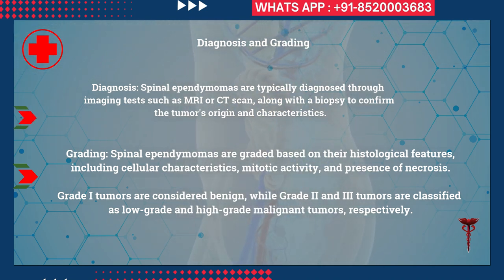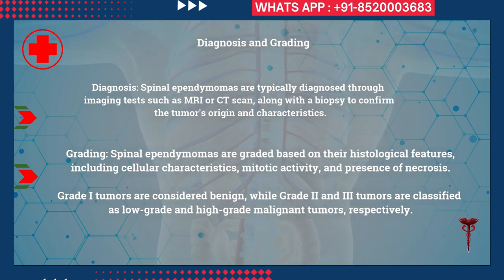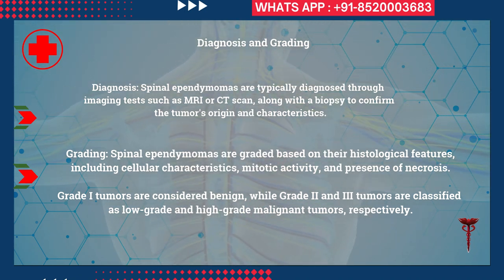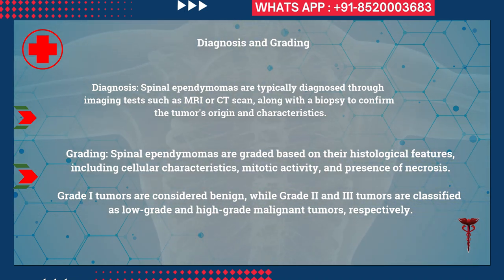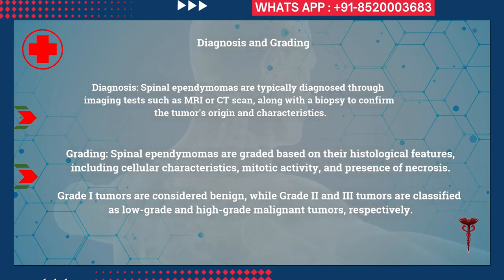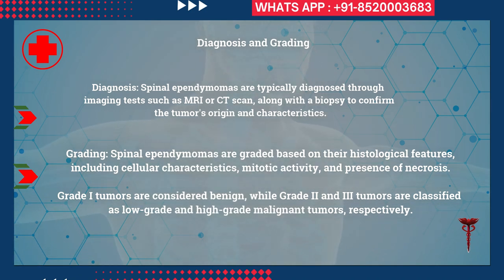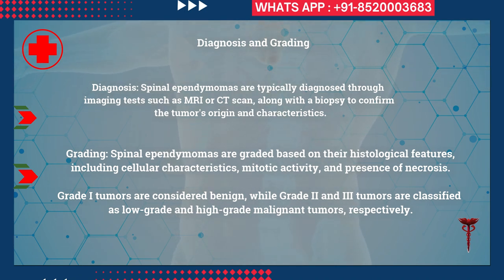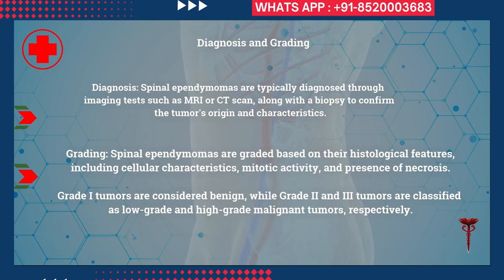How do you diagnose them? Spinal ependymomas are typically diagnosed through imaging tests such as an MRI or CT scan, but biopsy and microscopic examination are compulsory to confirm the tumor's origin and characteristics. Microscopical examination of the excised tumor during surgery is the gold standard for confirmation and diagnosis, with MRI scan used before surgery.